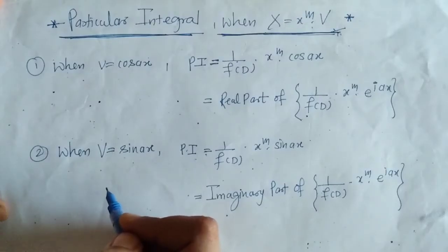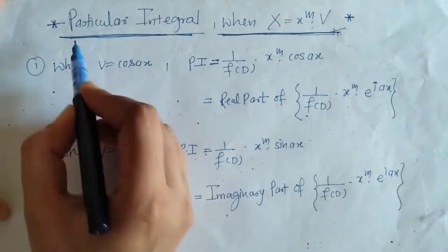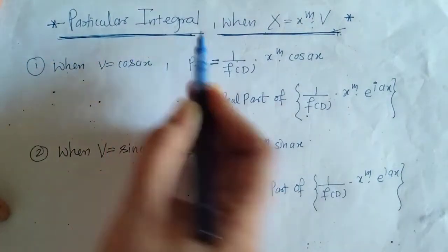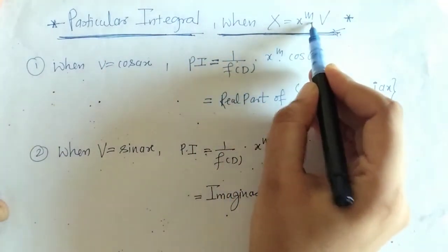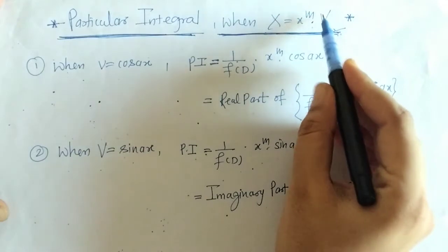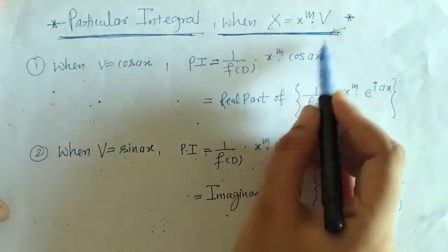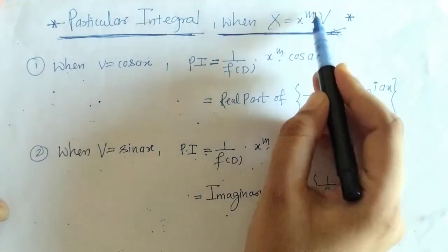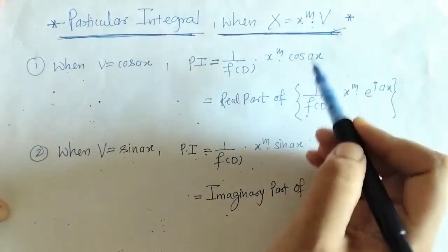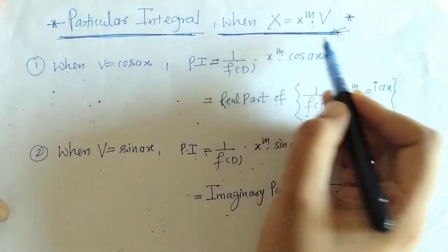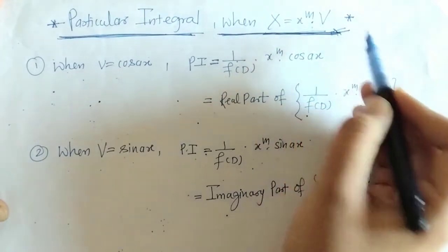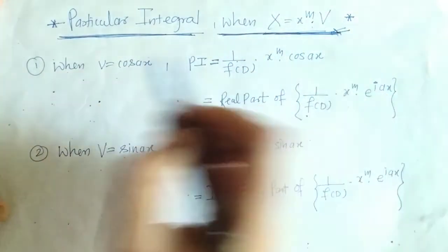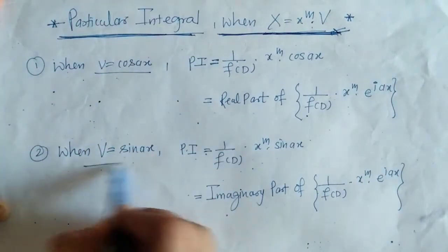Hello everyone, welcome to Unlock Maths. Today we are going to solve the particular integral when x equals x raised to m into v, where v is sin(ax) or cos(ax) and m is a positive integer. In the last lecture we have seen how to proceed for this type when v equals sin(ax) and cos(ax).